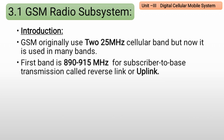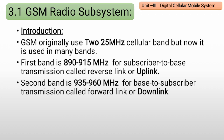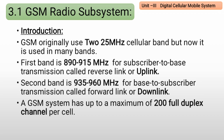The second band is 935 to 960 MHz for base to subscriber transmission, called downlink or forward link. This band is also 25 MHz wide (960 minus 935 equals 25 MHz). A GSM system has up to a maximum of 200 full duplex channels per cell.